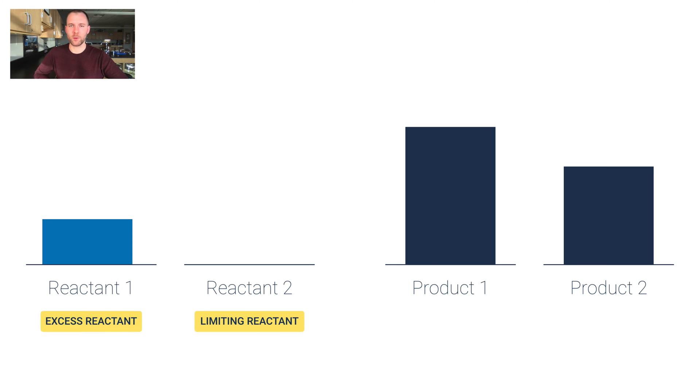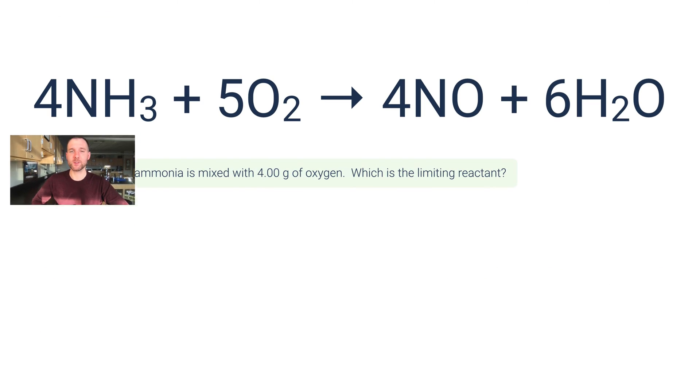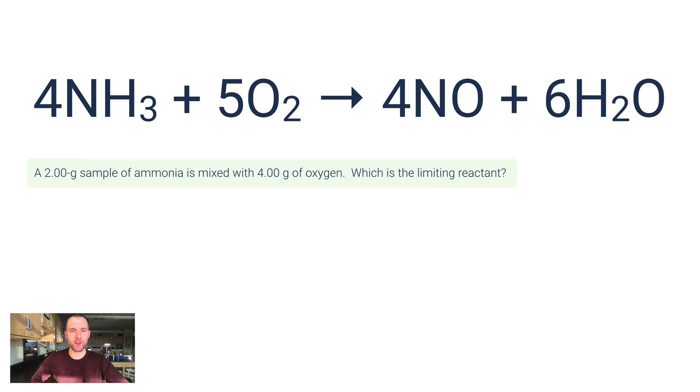Even though I have an excess amount of reactant one and plenty of products, we're done. So reactant two is the limiting reactant, and in this case, reactant one would be considered the excess reactant. Let's do an example problem here. This is ammonia reacting with oxygen to produce nitrogen monoxide and water. The question says a 2 gram sample of ammonia is mixed with 4 grams of oxygen. Which is the limiting reactant?